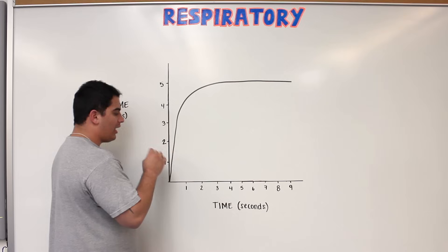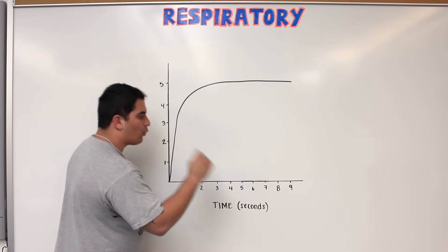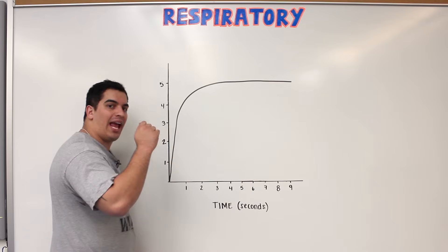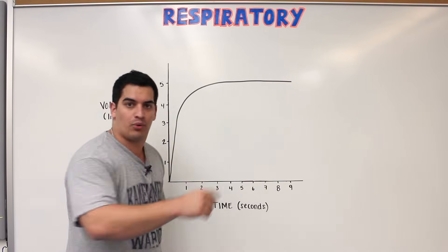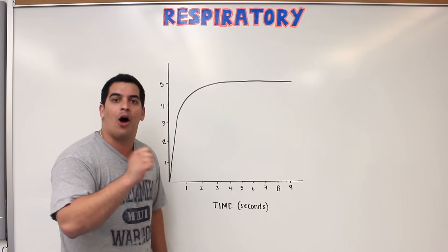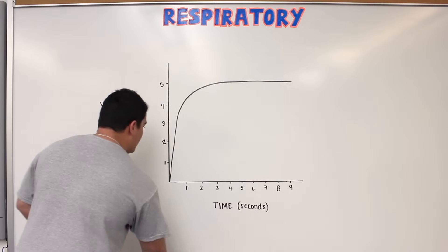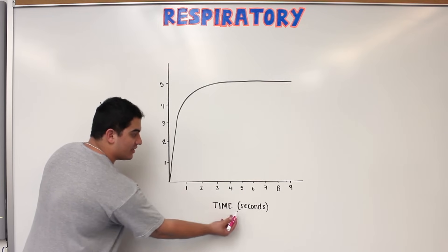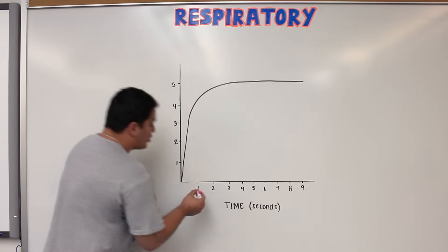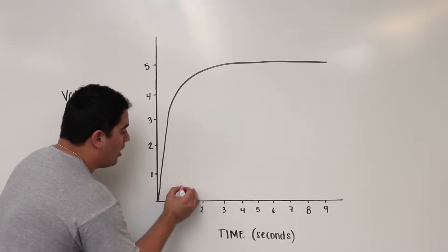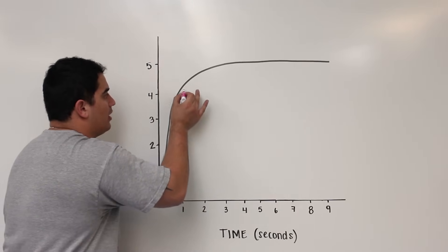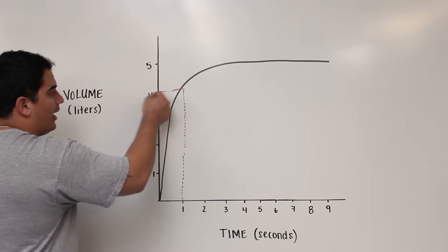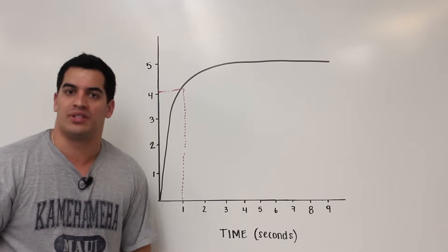For obstructive and restrictive pulmonary disorders, we need to look at two points on this curve. The first point is how much air we can forcefully expire within the first second of expiration. On this graph, time is on the x-axis in seconds, and volume is on the y-axis in liters. Coming up from one second on the graph, it's approximately four liters.